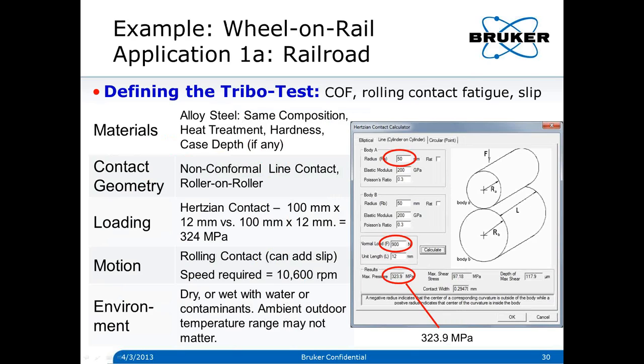Now I'll define the tribo test because I want to know the coefficient of friction and rolling contact fatigue. I'll choose the same alloy steel composition, heat treatment, hardness, and case depth. For geometry, the only way to get the same stress without applying 110,000 newtons — which I can't do on my local machine — is to do roller on roller. I can still do the Hertzian contact: with a 100-millimeter diameter wheel, same bulk modulus and Poisson's ratio, I can put a load of 900 newtons and get 324 megapascals — the same contact stress as in the real-life situation.